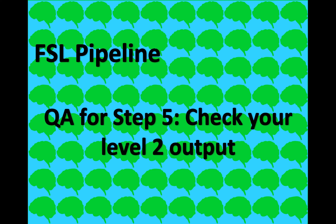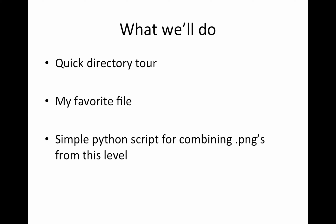Today we're going to go over the quality assurance for the fifth step, which was running the level two analysis. Hopefully you've run your level twos, and now it is time to check to make sure they ran without any flaws. This will be pretty quick.